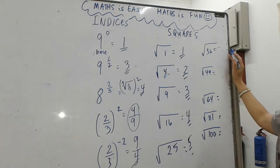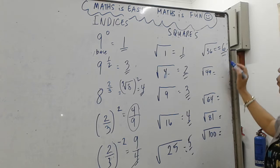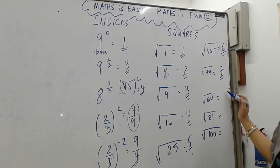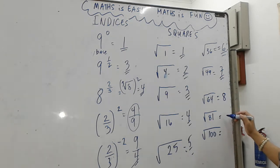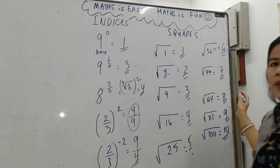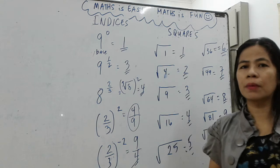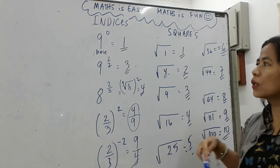The square root of thirty-six is six, the square root of forty-nine is seven, the square root of sixty-four is eight, the square root of eighty-one is nine, and the square root of one hundred is ten because ten times ten equals one hundred.